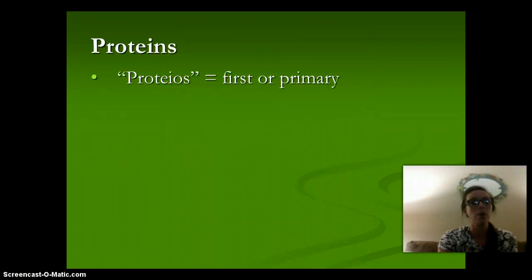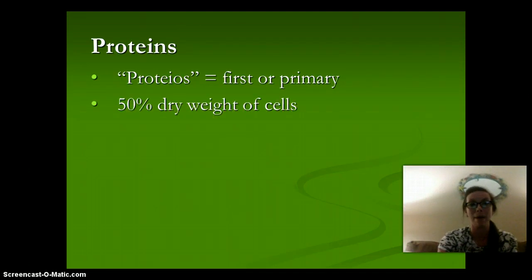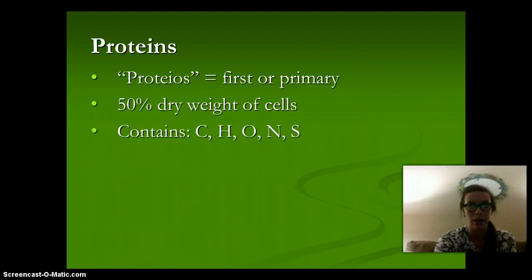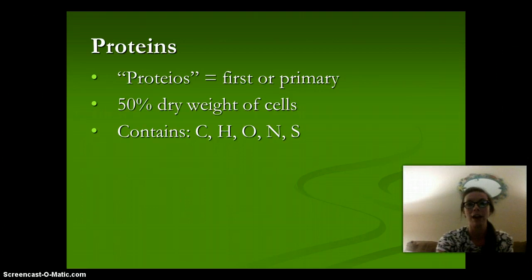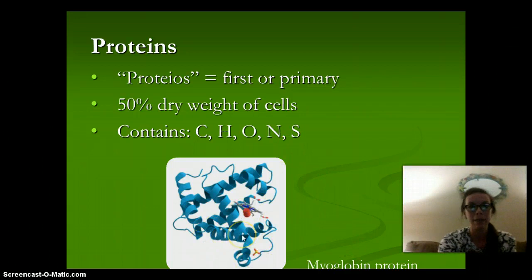Our proteins come from the word 'proteose,' which means first or primary. They make up 50% of the dry weight of our cells. Proteins contain C, H, O, N, and S — carbon, hydrogen, oxygen, nitrogen, and sulfur. Here is an example: you can see it's a swirly, twisted molecule. This is myoglobin, and myoglobin is a protein.